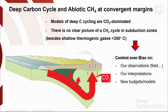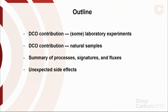I would like to start with the very important contribution that DCO scientists have provided to this topic over the last decade, from both experimental and natural sample studies, and then move to a brief summary of what we know about the processes, the signatures, and the fluxes of deep abiotic methane at convergent margins, and conclude with an example of very unexpected side effects of these processes at depth.